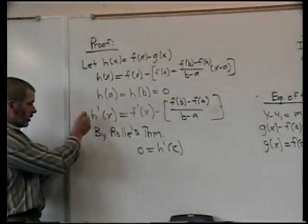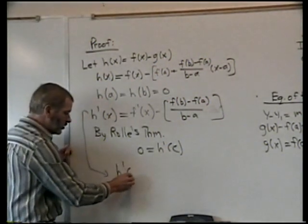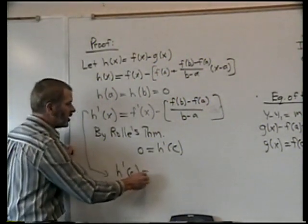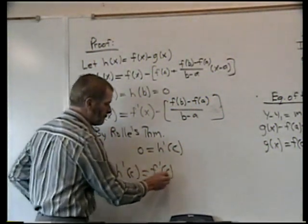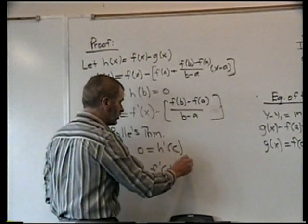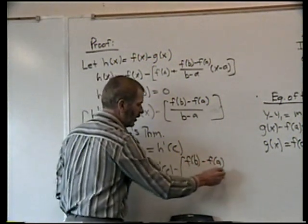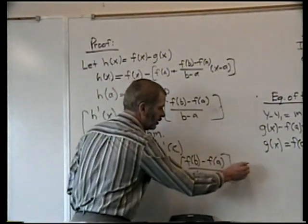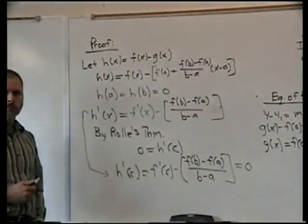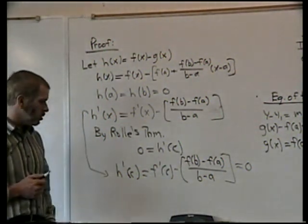If we take this equation for h' and we say h'(c), that's going to be equal to f'(c) minus [f(b) - f(a)] / (b - a). That has to equal zero because we've just established that h'(c) equals zero.